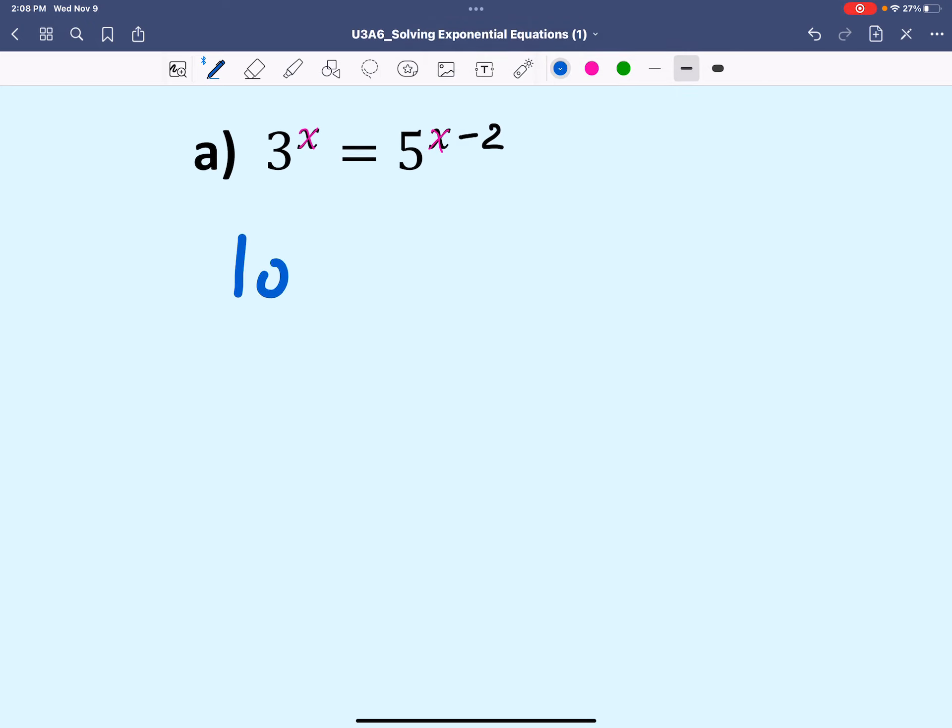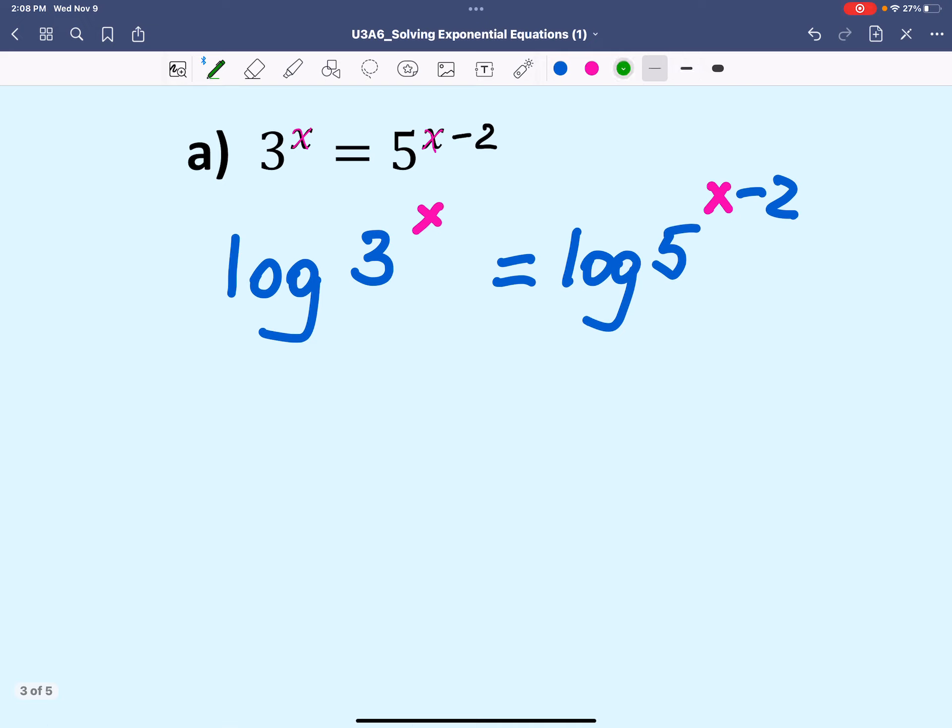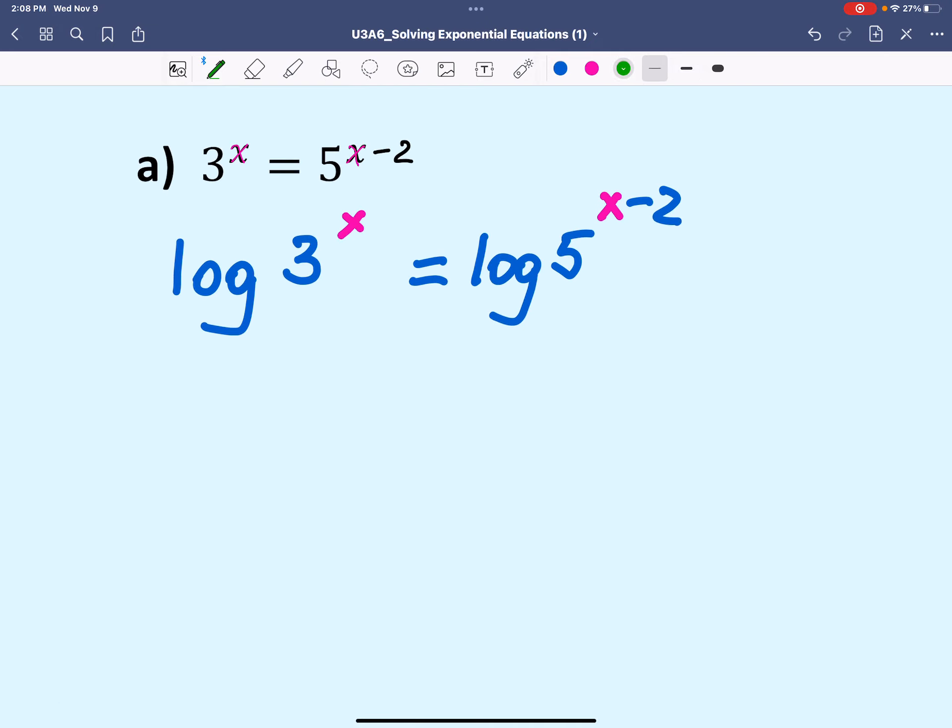So we're going to write the logarithm of 3 to the power of x equals the logarithm of 5 to the power of x minus 2. At this point, we are going to apply the power rule. If you remember, the power rule states that log base b of x to the power of r equals r log base b of x. In other words, the power comes to the front of log and becomes a coefficient.